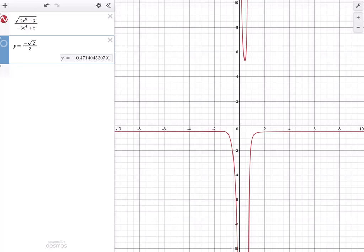Let's go ahead and check our work with graphing. So if I graph square root of 2x to the eighth plus 3 divided by negative 3x to the fourth plus x, and it does look like it goes to a negative value as x goes to positive and negative infinity. My answer that I had gotten was negative square root of 2 over 3. When I graphed that, I find, in fact, that is the limit. So this is a great way to be able to check your work.